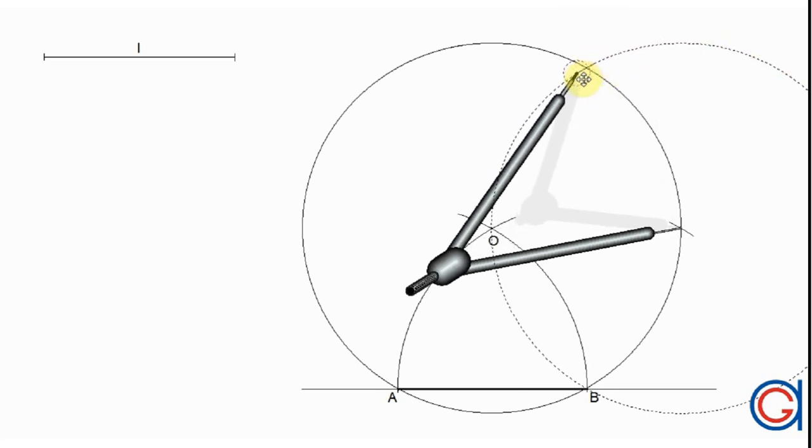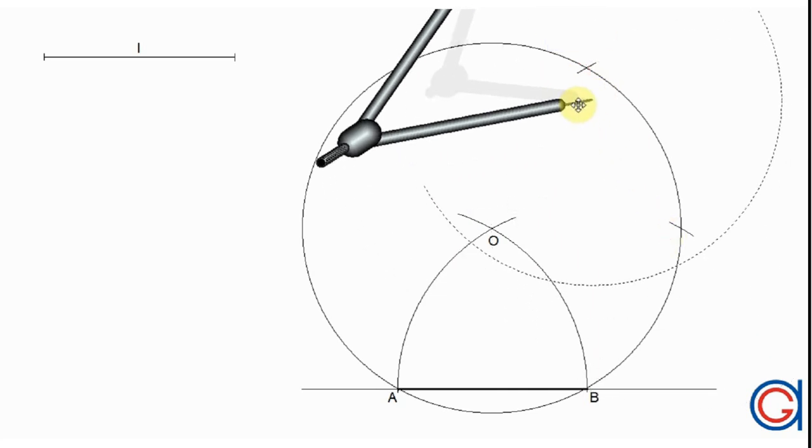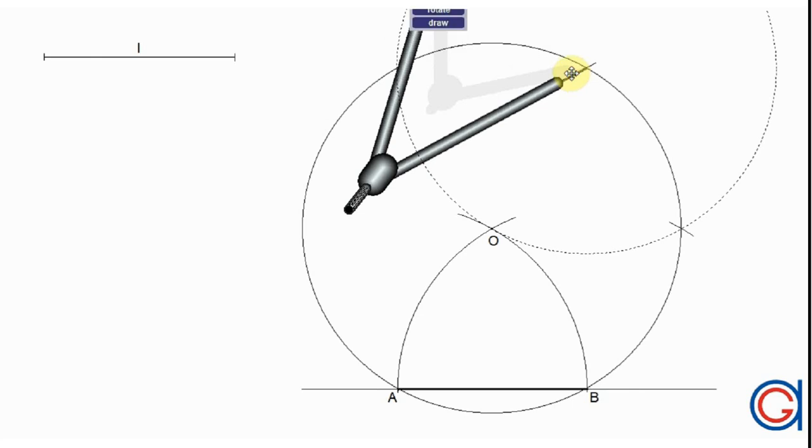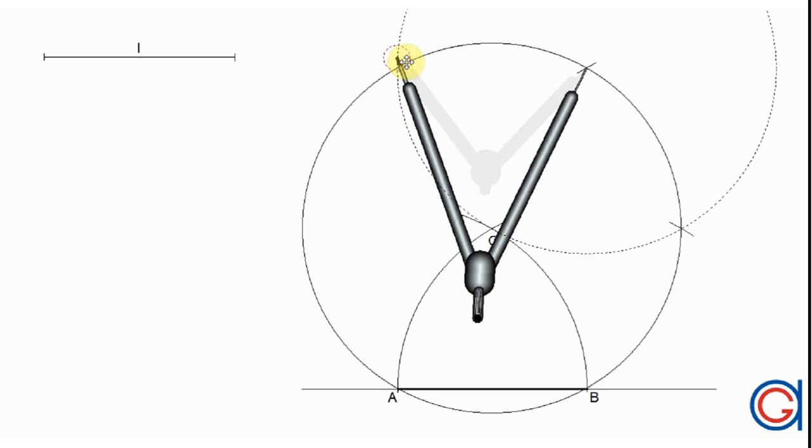Now, setting our compass on this point, we will scribe another arc, which will be the fourth vertices of the hexagon. We continue marking our vertices by setting the compass on the previous vertices, as shown here.